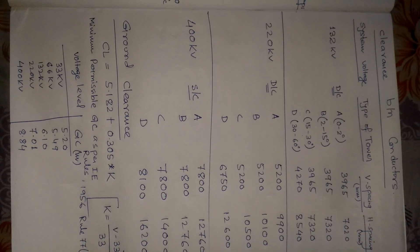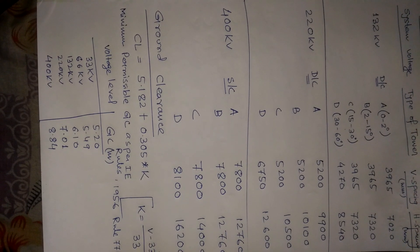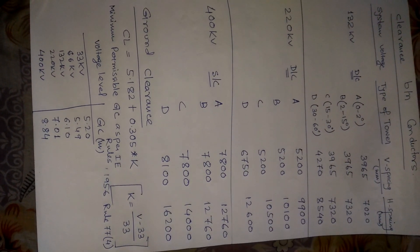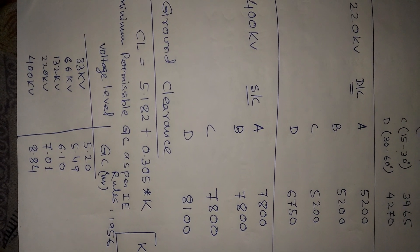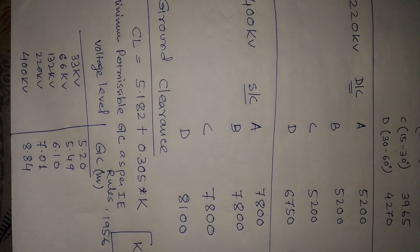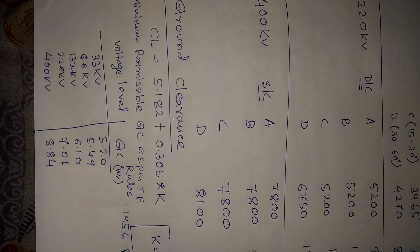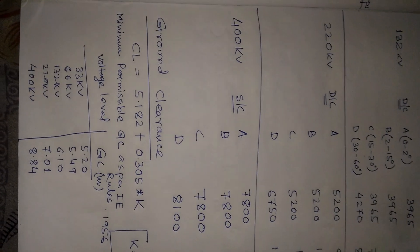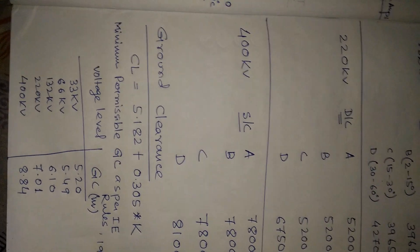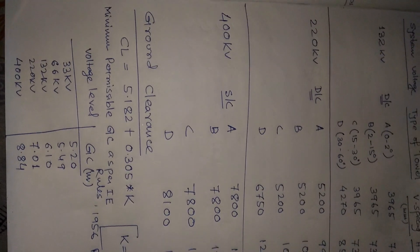Ground clearance: The minimum permissible ground clearance as per IE Rules 1956, Rule 77(4) is as follows — 33 kV: 5.20 m; 66 kV: 5.49 m; 132 kV: 6.10 m; 220 kV: 7.01 m; 400 kV: 8.84 m. From experience, for 132 kV lines we currently use a tower height of 15 meters (45 feet) from ground level.